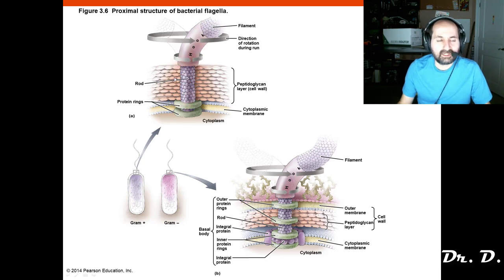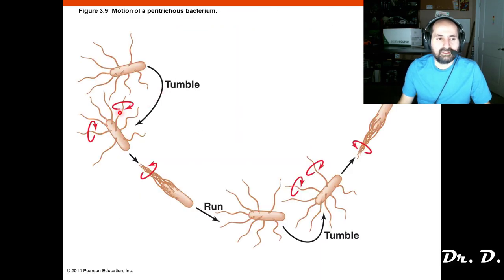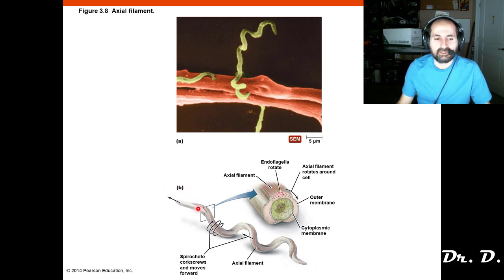The eukaryotic flagella beats back and forth — that's something important to know. In prokaryotes, flagella movement is a run-and-tumble effect. We also talked about the axial filament, where flagella are internalized — they're right outside the cell membrane but inside the outer membrane. Those flagella cause corkscrew motility.